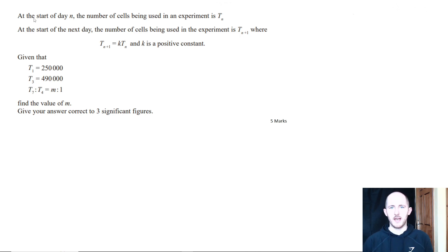This is basically a grade 9 question. At the start of day n, the number of cells being used in an experiment is t_n, and the next day is t_{n+1}. They give you the formula t_{n+1} = k·t_n, where k is just some constant and it's positive, which should make sense because our answer should always be positive. It gives us a few values for t and also a ratio, and we have to work out the value of m, giving the answer correct to three significant figures.